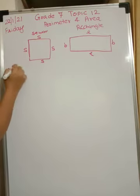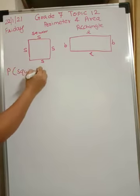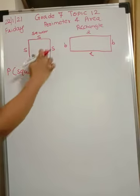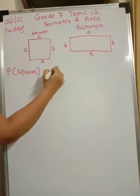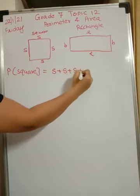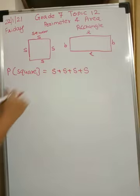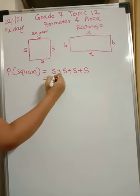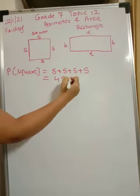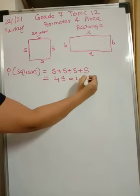Now let us find the perimeter of the square. Perimeter is the sum of all the sides — there are four sides. So it will be s plus s plus s plus s, where s is the side. That is s added 4 times, which is nothing but 4s. So we can say the perimeter of a square is 4 times the side.